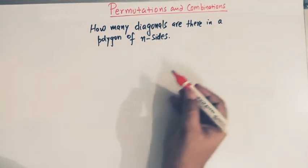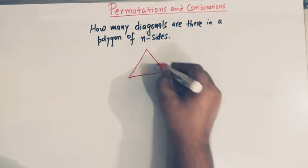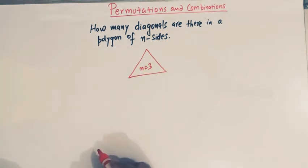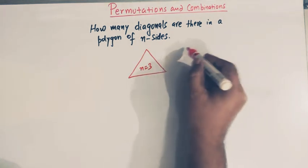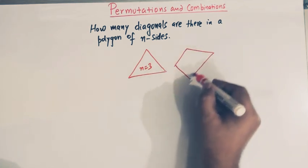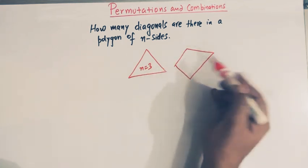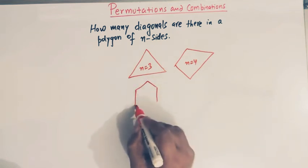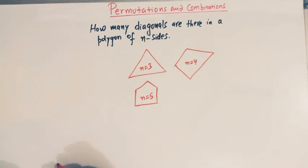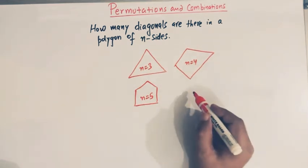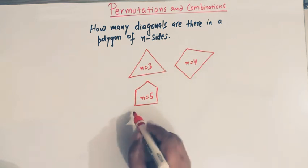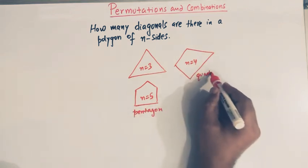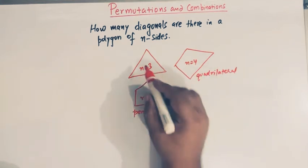For example, a triangle is a polygon and it has three sides, so n is three. Similarly, a quadrilateral has four sides, so n is equal to four. A pentagon has five sides, and a hexagon has six sides.